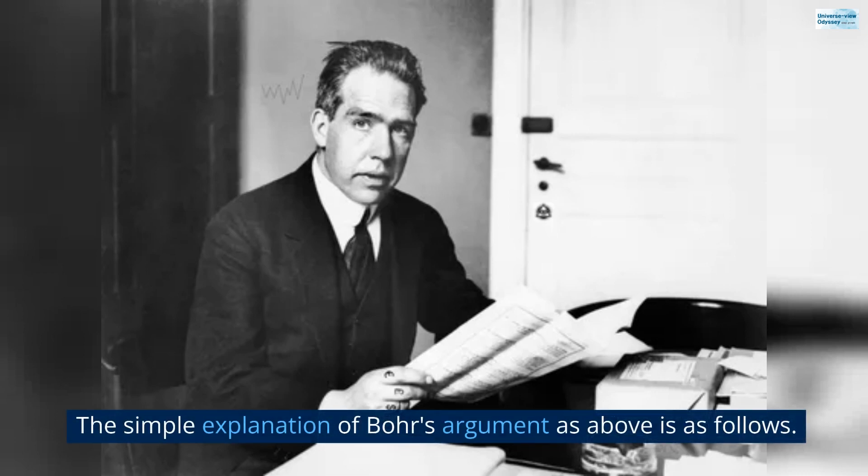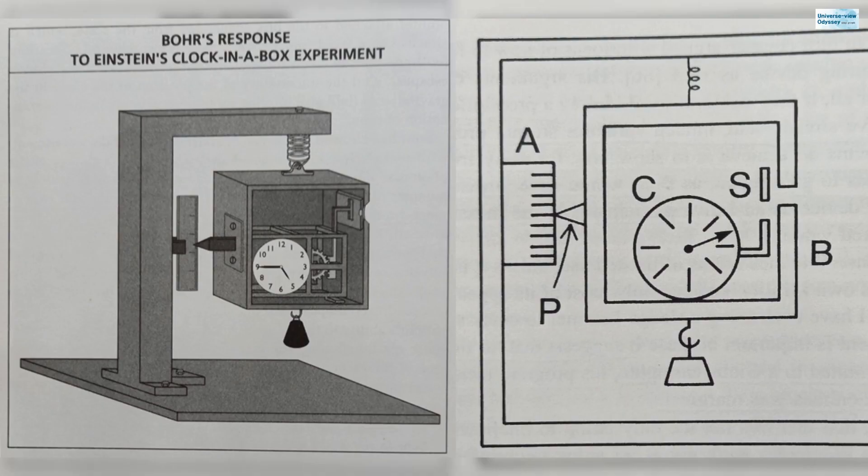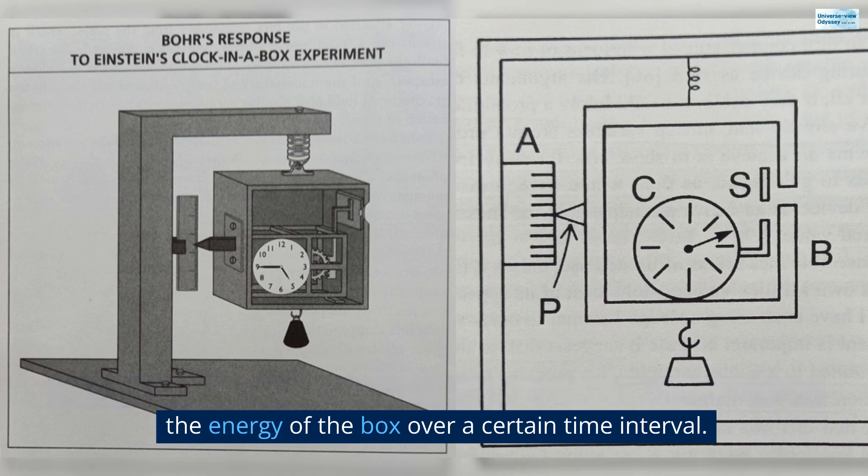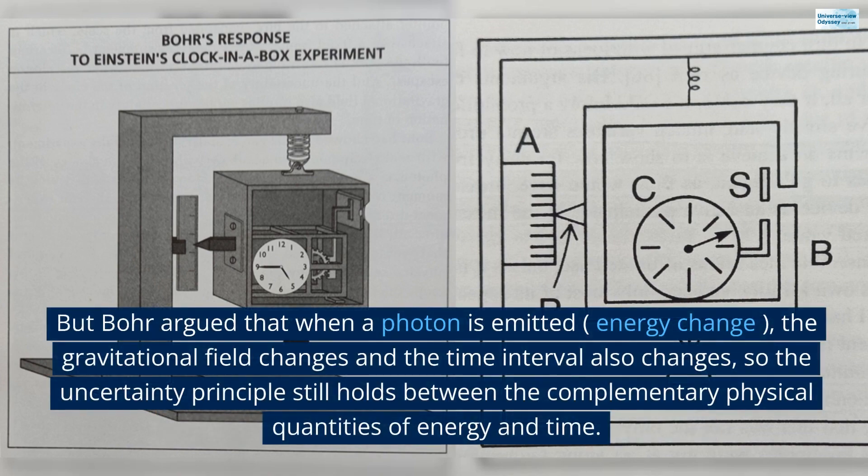The simple explanation of Bohr's argument as above is as follows. Einstein said that it was possible to accurately measure the change in the energy of the box over a certain time interval. But Bohr argued that when a photon is emitted, energy change, the gravitational field changes and the time interval also changes. So the uncertainty principle still holds between the complementary physical quantities of energy and time.